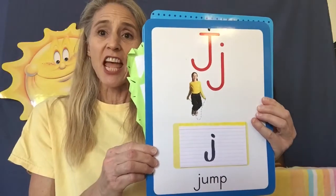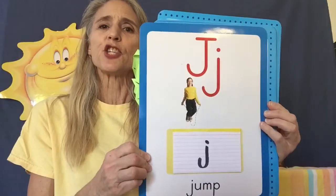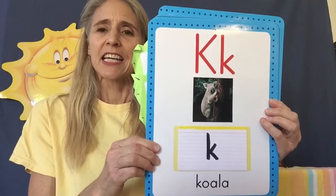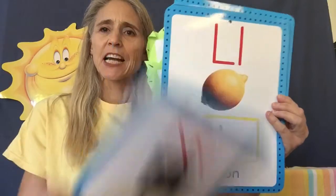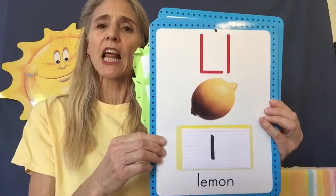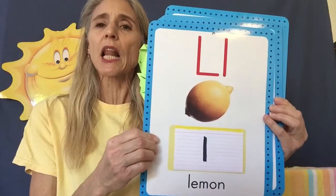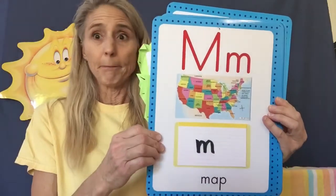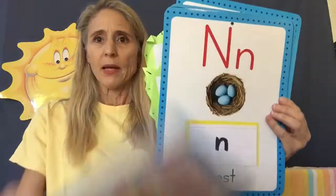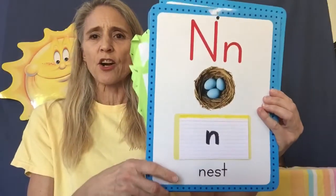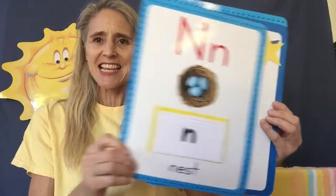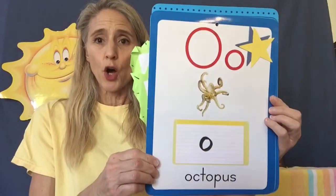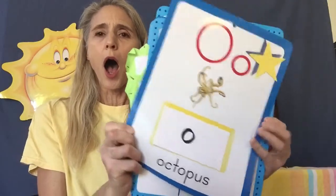Jumping card J — j, j, j. Koala card K — k, k, k. Lemon card L — l, l, l. Map card M — m, m, m. Nest card N — n, n, n. Octopus card O — ah, ah, ah.